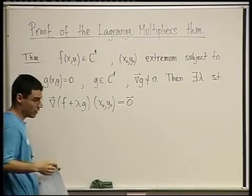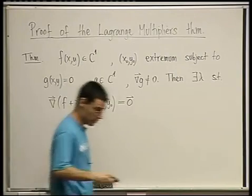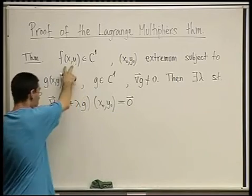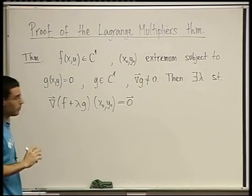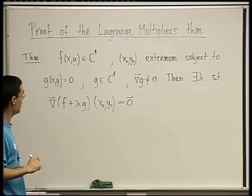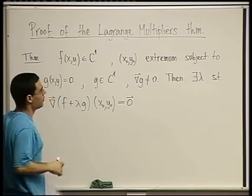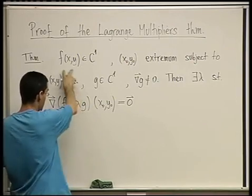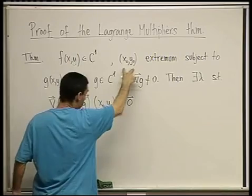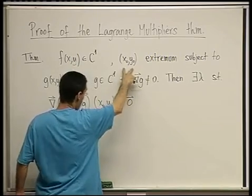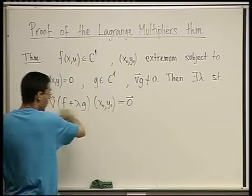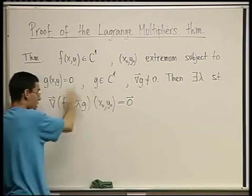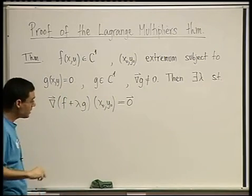I want to prove the Lagrange multiplier theorem. I converted it back to the two-variable version, and I'm going to prove that. The idea of the proof is the same. We have a C1 function, and a point where the condition holds: the gradient of f plus lambda times g is zero, where g is also C1 — that's the constraint.